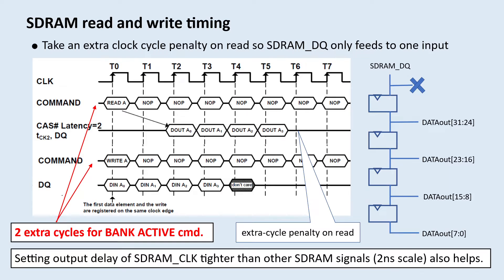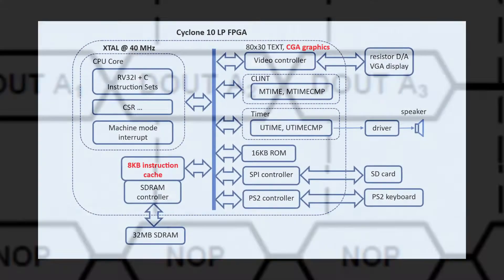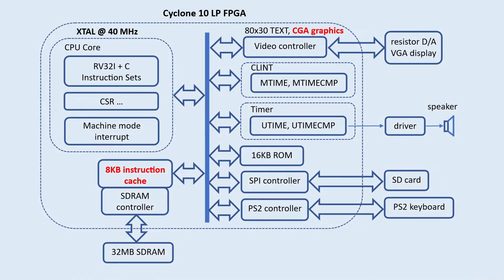However, the access of the SDRAM is pretty slow. A read access can take up to 7 to 8 cycles. In this project update, I will add 8 kilobytes of instruction cache and see how much it could improve the performance.